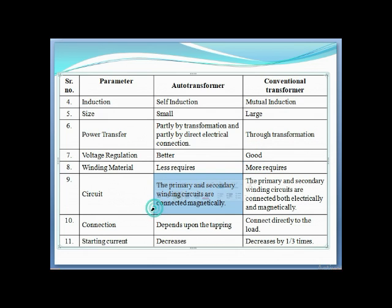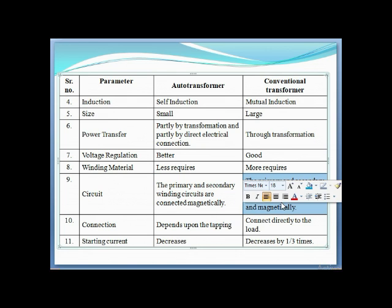In the auto transformer, the primary and secondary winding circuits are magnetically connected. In the two-winding transformer, the primary and secondary winding circuits are connected both electrically and magnetically. The two-winding transformer thus has both electrical and magnetic connection between its two windings.